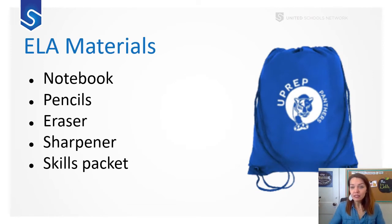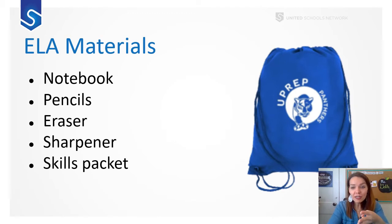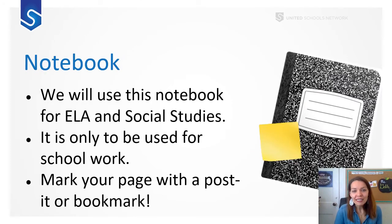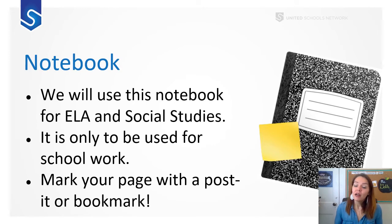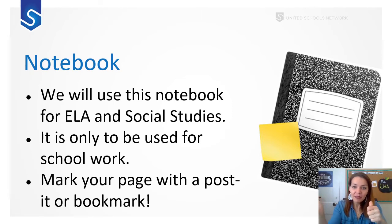The ELA materials we'll most likely use are the composition notebook — we'll take notes in it, outline paragraphs, and write essays. You'll also need pencils, erasers, maybe your sharpener, and sometimes your skills packet. The notebook is for ELA and social studies only and only for schoolwork. A great way to keep track of your place is to mark your page with a post-it or bookmark so you can find what you've written.